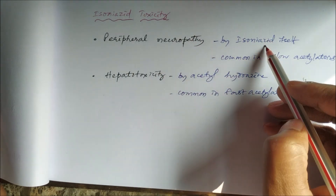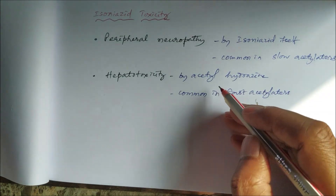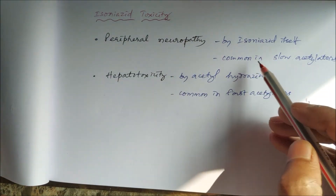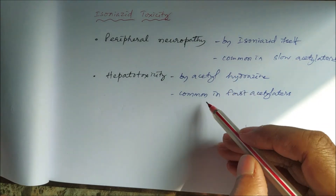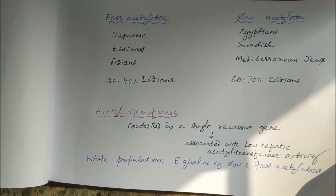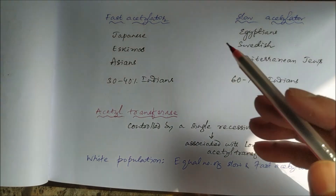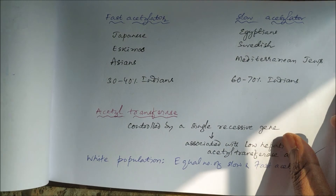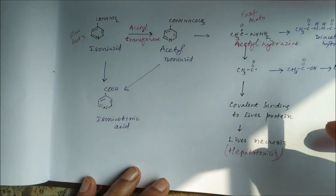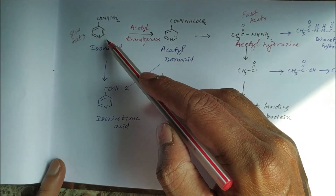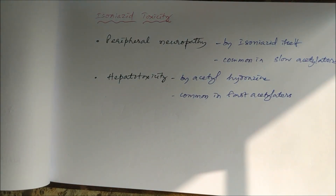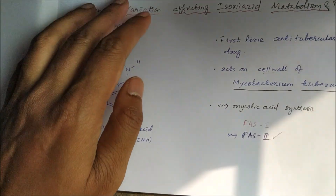Peripheral neuropathy is caused by isoniazid itself, while hepatotoxicity is caused by acetylhydrazine, the metabolite of isoniazid. Hence, peripheral neuropathy is common in slow acetylators whereas hepatotoxicity is common in fast acetylators. Because acetyltransferase activity varies from population to population, in fast acetylators the metabolite causes hepatotoxicity, and in slow acetylators isoniazid itself causes peripheral neuropathy. This concludes the topic of genetic variation, isoniazid metabolism, and toxicity.